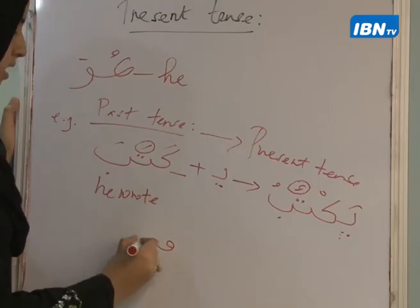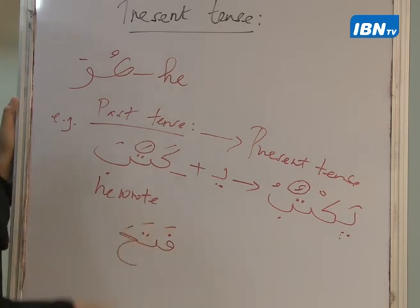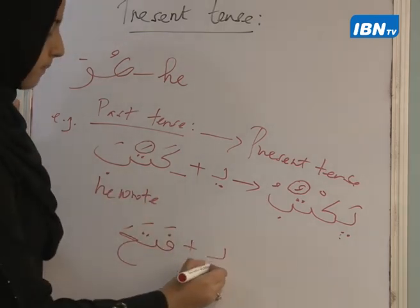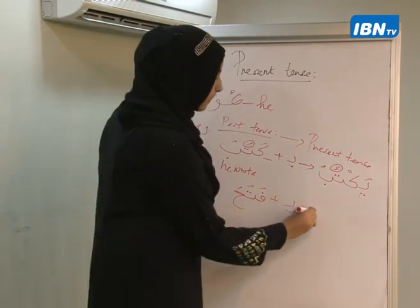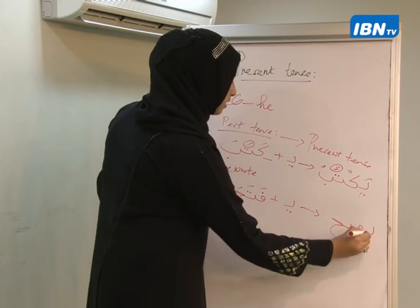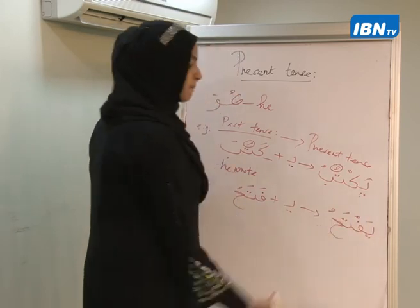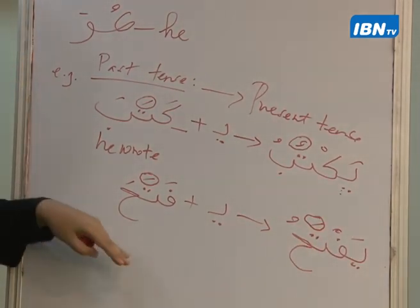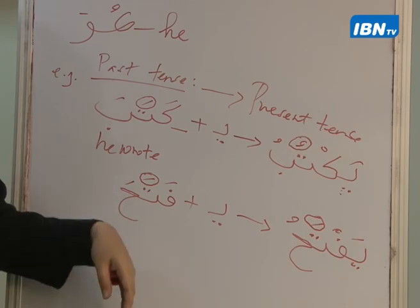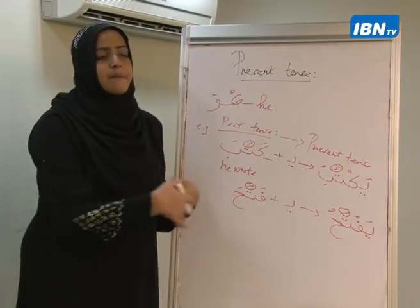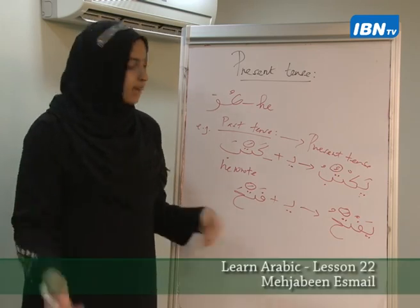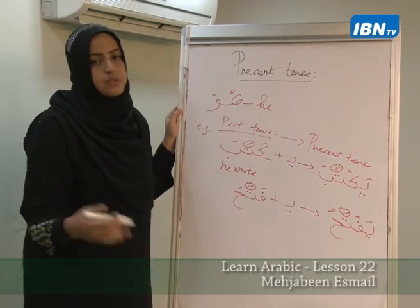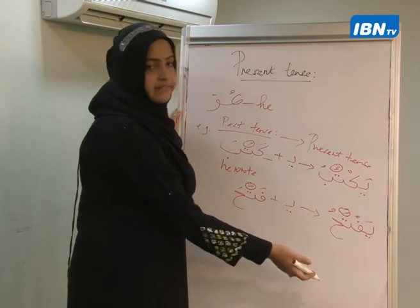Say for example I have fataha, which means 'he opened'. If I change this into present tense, I add a ya at the beginning. But here you notice the vowel does not change — it remains accusative. So it becomes yaftahu, not yaftuhu. Yaftuhu doesn't sound nice, so the Arabic grammarians decided to leave it the same.